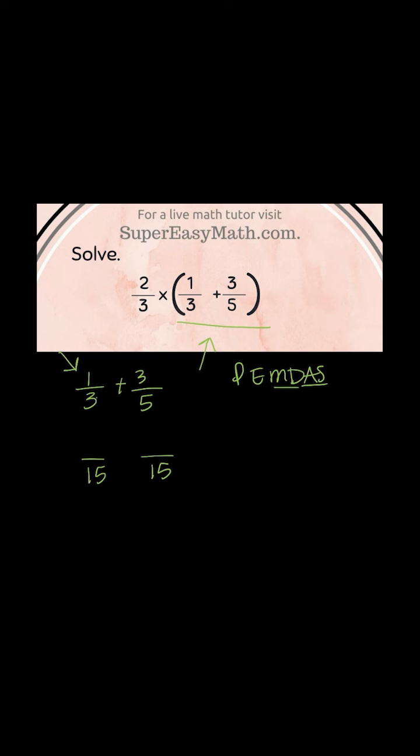Now I'm looking at the three, and I ask myself to go from three to 15, what did I multiply the three by? And that was by five, and I need to do the same on the top, so it's one times five, and that would be five. Over here, five times what gives you 15? That would be five times three, and so I multiply by three on the top as well. So three times three is nine.